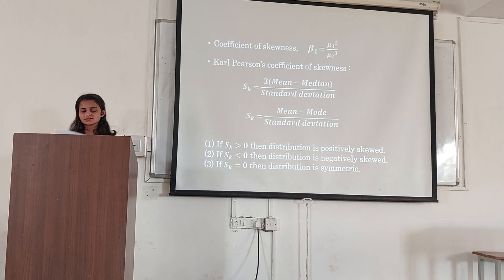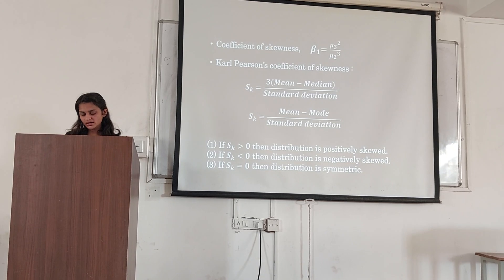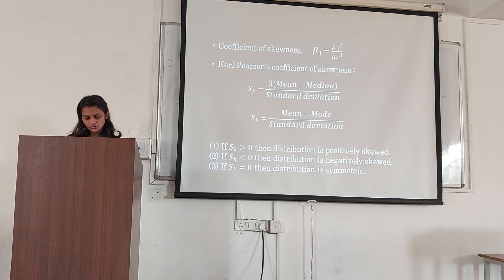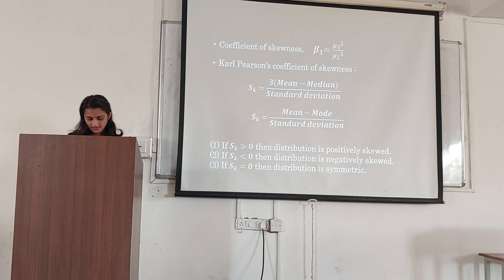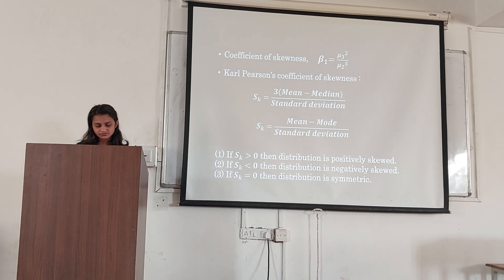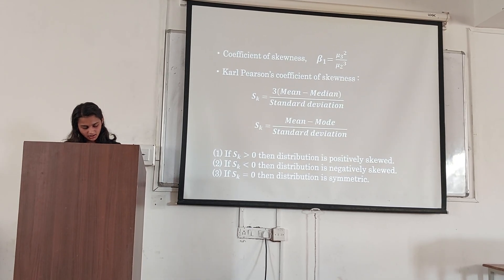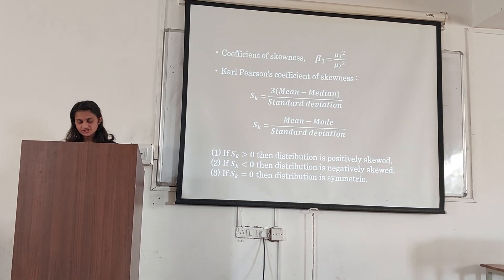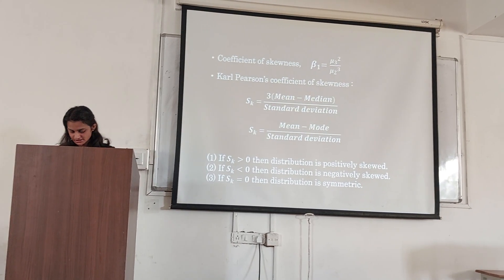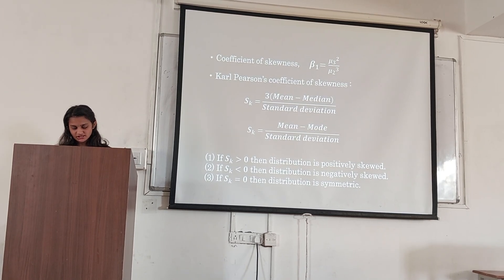The coefficient of skewness beta 1 is equal to mu 3 squared divided by mu 2 cubed. The coefficient of skewness Sk equals mean minus mode divided by standard deviation. If Sk is greater than 0, the distribution is positively skewed. If Sk is less than 0, the distribution is negatively skewed. And if Sk equals 0, the distribution is symmetrical.